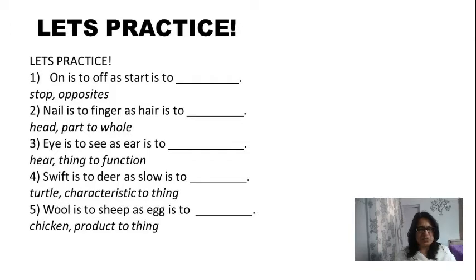Eye is to see as ear is to? Here, eye is having a function, so eye is to see, so what is the function of ear? It's hearing, so the answer is hear. Swift is to deer as slow is to? Well, it is a characteristic that we are looking at. So a deer is swift, that's the characteristic of deer, so here the characteristic of some animal that is slow, that is considered really slow, that's a tortoise or a turtle, so the answer is turtle.